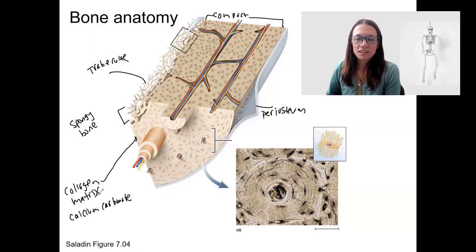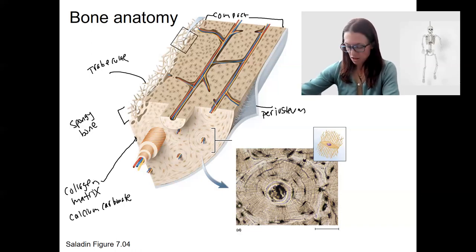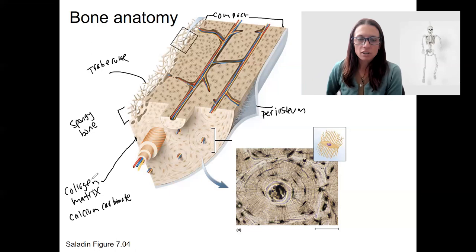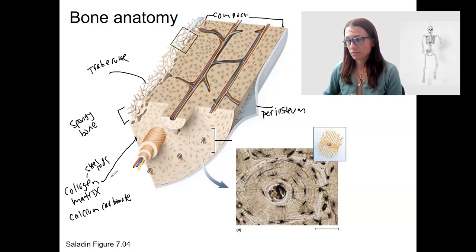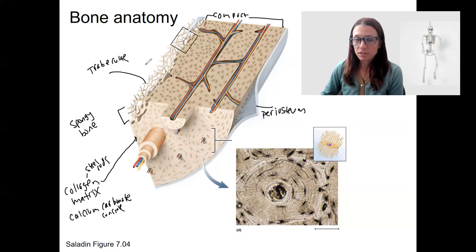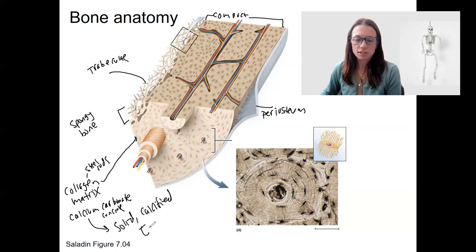And some calcium phosphate mineral kind of infusion. So the minerals that surround the collagen matrix make it strong, flexible and shatter resistant. So it's kind of like having steel rods that then are surrounded by steel rods, surrounded by cement or concrete, right? It's a very strong structure. So the matrix, the extracellular matrix of bone is calcified. So that ends up being a solid calcified extracellular matrix.